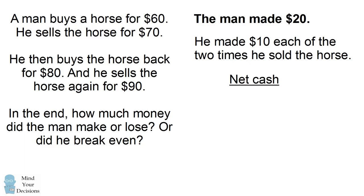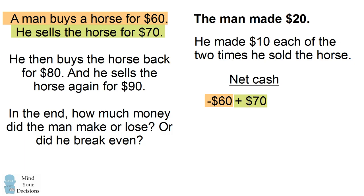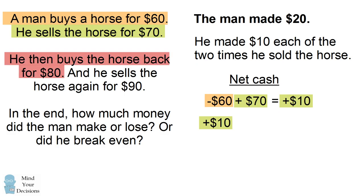We can also see this by tracking his net cash position. In the first transaction, he buys the horse for $60, so he's out $60 — negative $60 relative to his starting point. He sells the horse for $70, getting plus $70, which results in a cash position of plus $10 from where he started. He then buys the horse back for $80, spending negative $80, so his net position is negative $70.